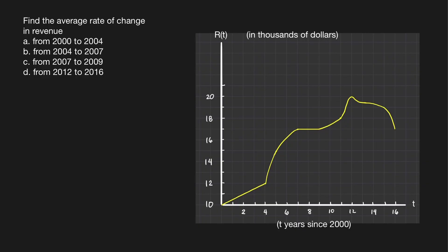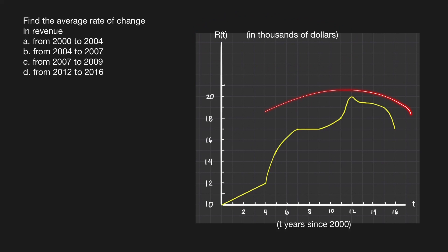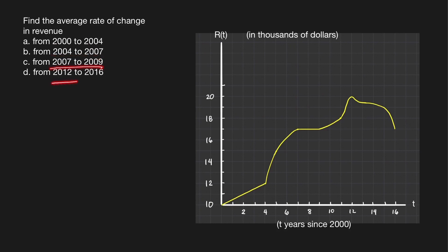In this video, we're going to discuss an application of average rate of change in business and economics. Suppose we have a company whose revenue in thousands of dollars is represented by this graph, T-years since 2000. Let's find the average rate of change in revenue from 2000 to 2004, 2004 to 2007, 2007 to 2009, and 2012 to 2016.